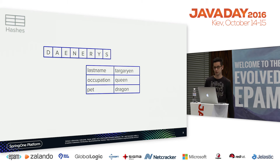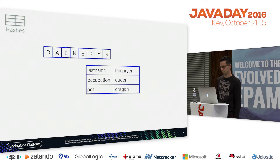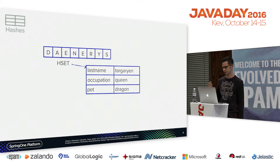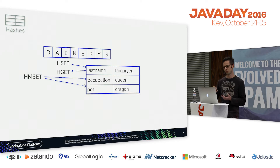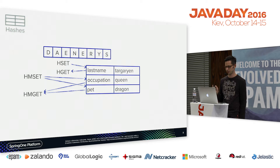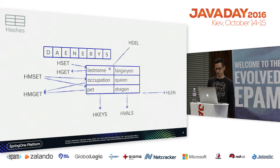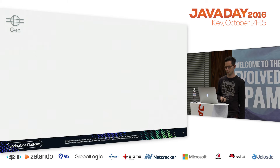Hashes are also very similar to the Java data structure. For example, the key is Daenerys with last name Targaryen, she's a queen and has dragons as pets. You can HSET and HGET individual fields. HMSET lets you add multiple keys and values to the hash, and HMGET retrieves multiple values given several keys. You can ask for the size of the hash with HLEN, remove elements with HDEL, and ask for keys, values, or both.